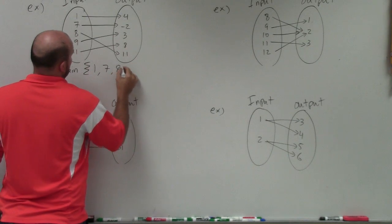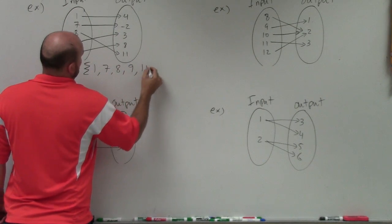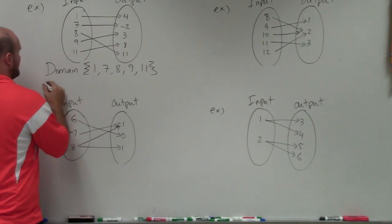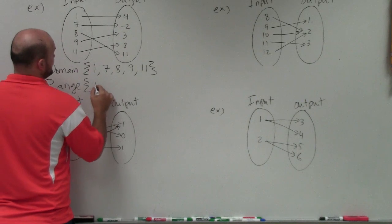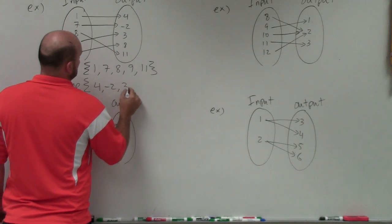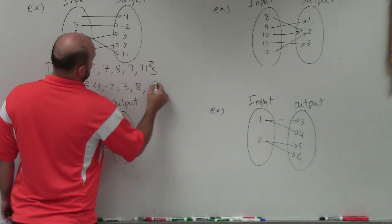So I'll just do 1, 7, 8, 9, and 11. For my range, that's going to be the set of all my outputs. So that's going to be 4, negative 2, 3, 8, and 11.